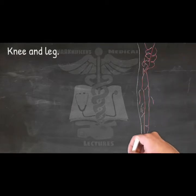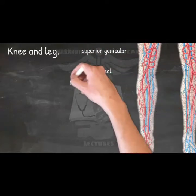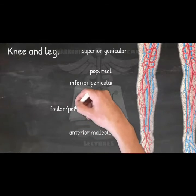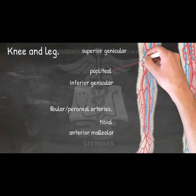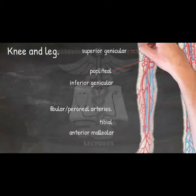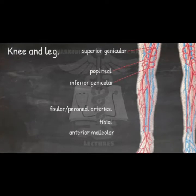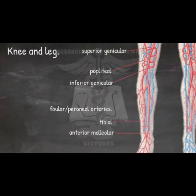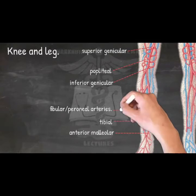Continuing further down the lower extremity, we reach the arteries of the knee and leg: popliteal, superior genicular, inferior genicular, tibial, anterior malleolar, and fibular or peroneal arteries. The popliteal artery is a direct continuation of the femoral artery, carrying blood further down the lower limb. In the knee, it gives off the superior and inferior genicular arteries which wrap around this region and supply it with blood. The popliteal artery then splits into the anterior and posterior tibial arteries that travel all the way towards the foot. The anterior tibial artery is the main blood supply for the anterior compartment of the leg, while the posterior tibial artery supplies oxygenated blood to structures such as the tibia, medial malleolus, and calcaneus with its surrounding muscles.